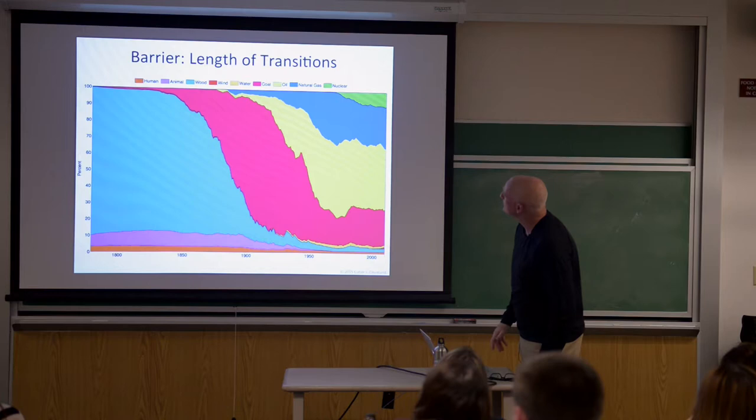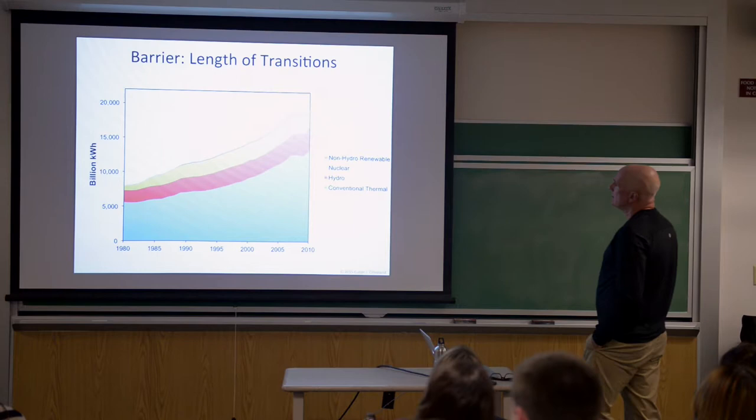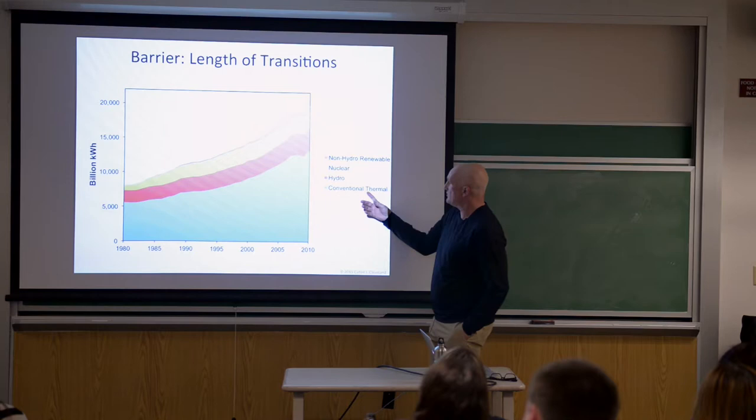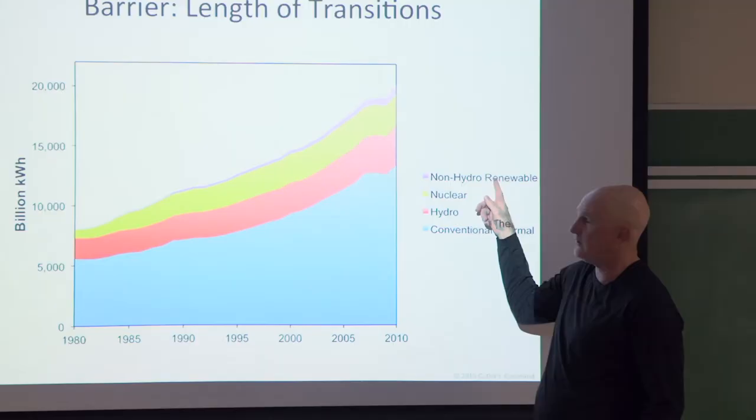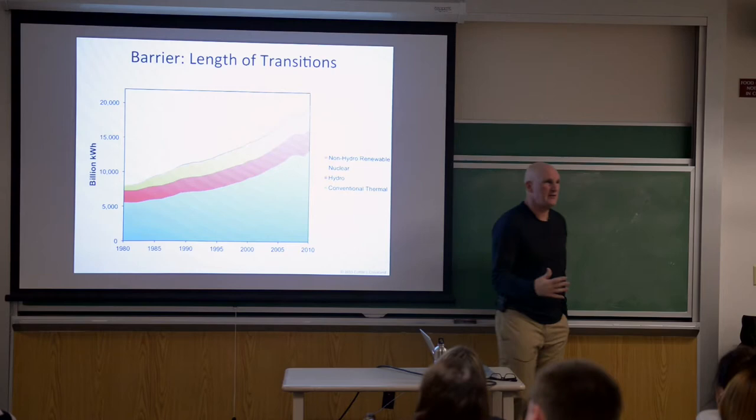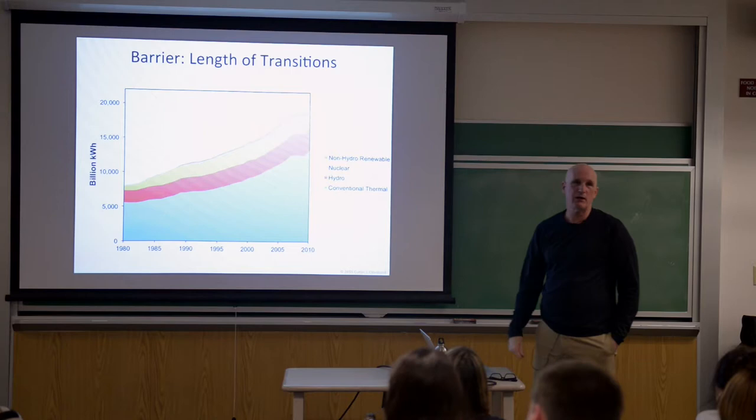Here's another example of transition. So this is world electricity generation, billions of kilowatt hours by different sources. So conventional thermal means burning coal, oil, or gas to generate electricity. Hydropower, nuclear, and non-hydro-renewables. So this is wind and solar. And the whole point of this is that if you look at the percentage of the fossil fuels in 1980, it's almost exactly what it is now. That's amazing. You think about that. So 30 years have gone by. We've fought wars over oil, climate change, all kinds of issues related to fossil fuels. Renewables have barely made a dent. Now they're moving quickly, especially in Europe, but it's still a tiny smidgen of total capacity.